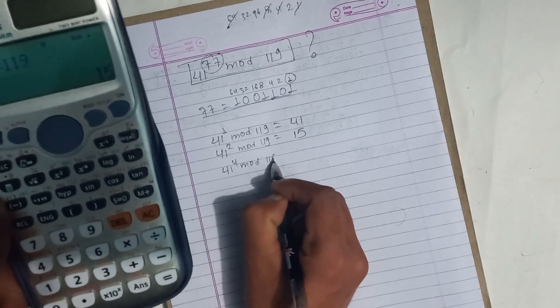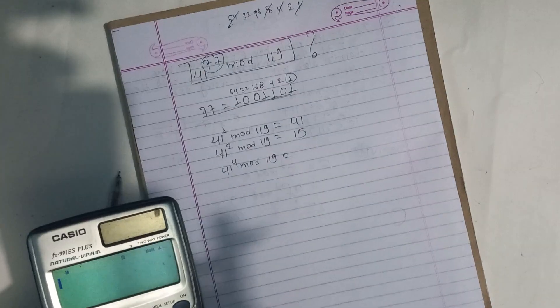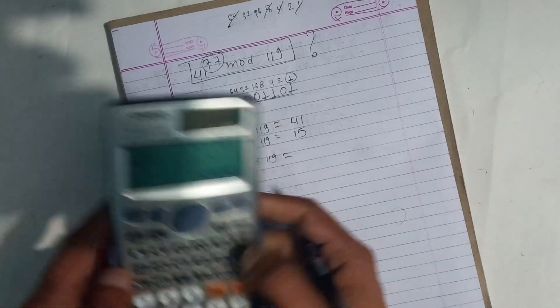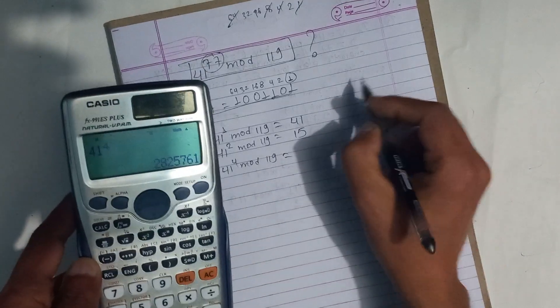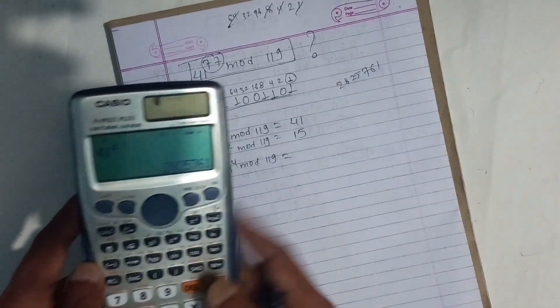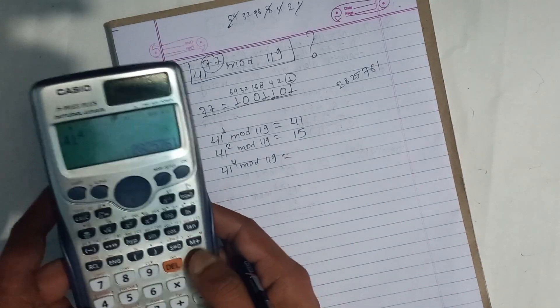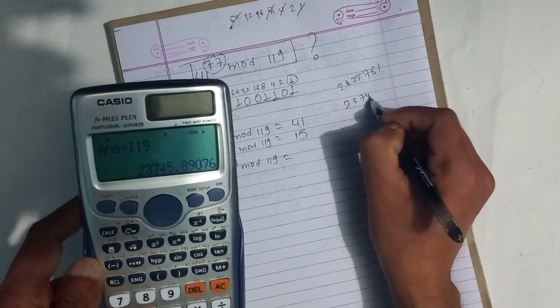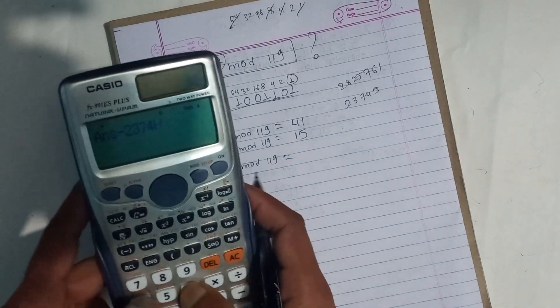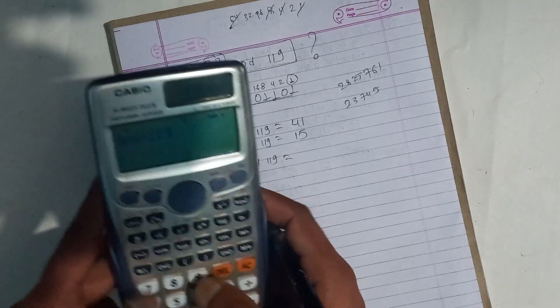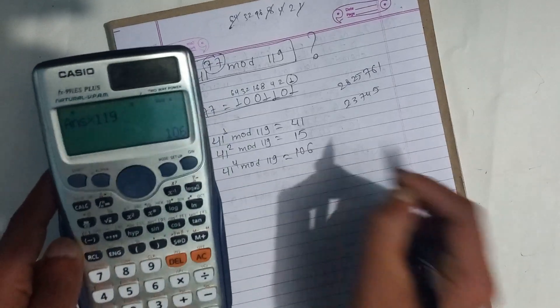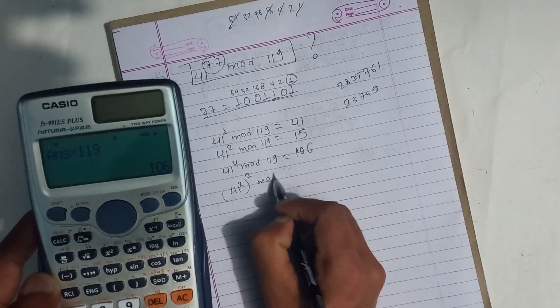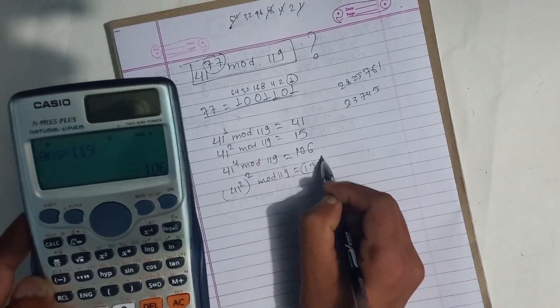41 power 4 mod 119. So we can see this is 15 squared. Perfect, 15. Now 41 power 4 mod 119. I'm going to divide by 119 and the value is 2374.5. So I have minus 0.2374.5, sorry 45, okay perfect. I will multiply by 119 and the value is 106. 106 is the value, so I have to take the method. I will compute 41 to power 4 as 41 squared mod 119 squared. So this is 15 square mod 119, right?